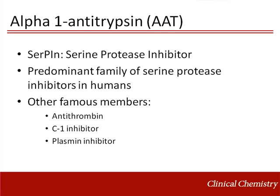Alpha-1-antitrypsin, or AAT, is located on the long arm of chromosome 14, and it's a member of the serine protease family. These proteases are the principal inhibitors of intracellular and extracellular proteolytic pathways, making them critical for physiological homeostasis.